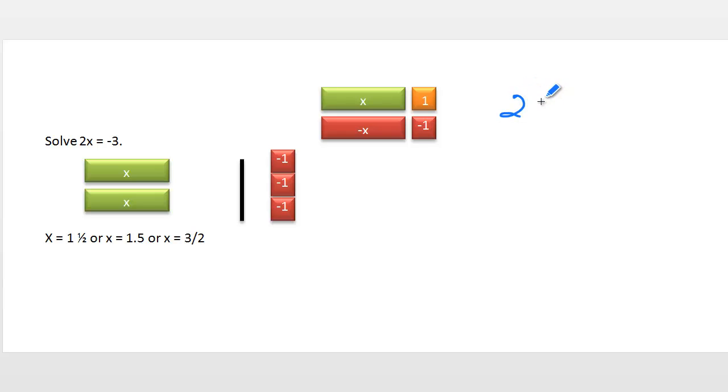Solving 2x equals a negative 3 algebraically means that since 2 is being taken times x, the opposite of multiplication is division. But if I divide the left-hand side by this positive 2, I need to divide the right-hand side by a positive 2. So x becomes either a negative 3 halves or a negative 1.5 or a negative 1 and 1 half.